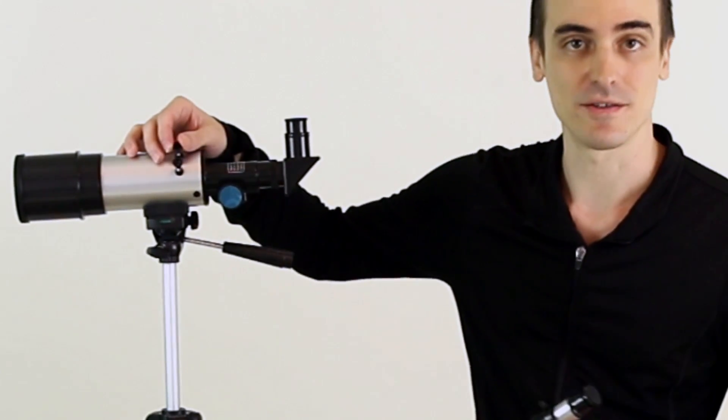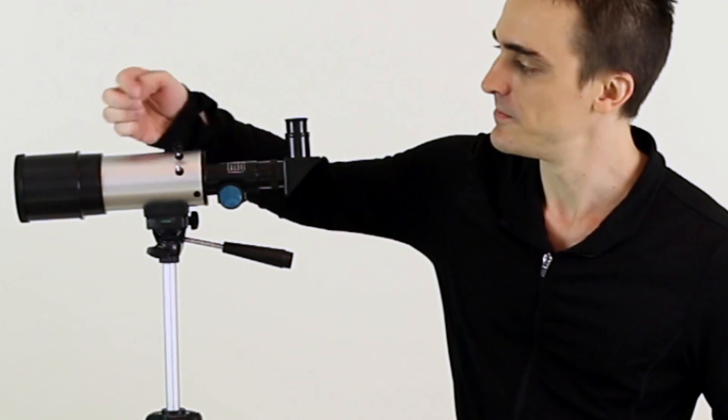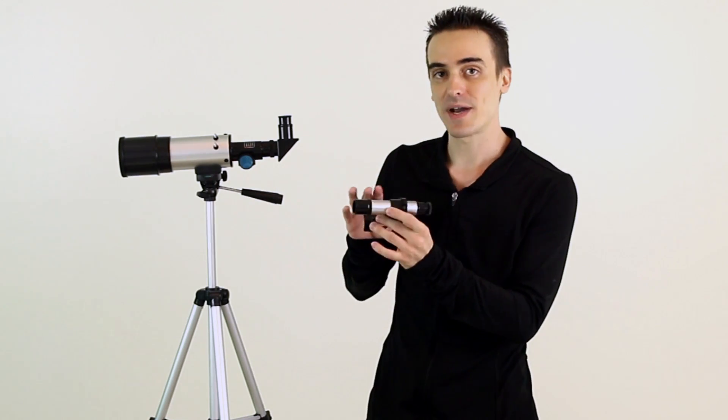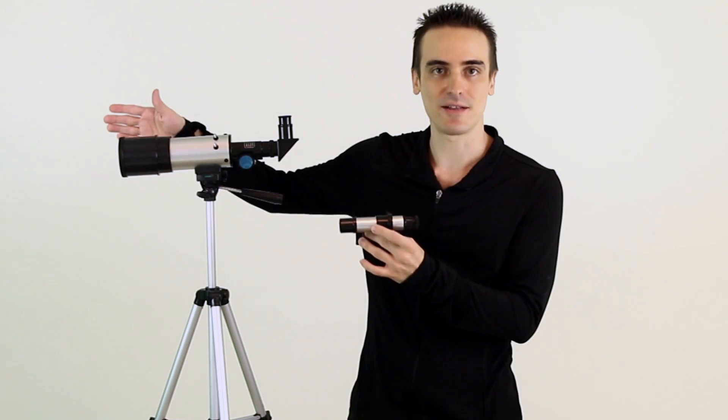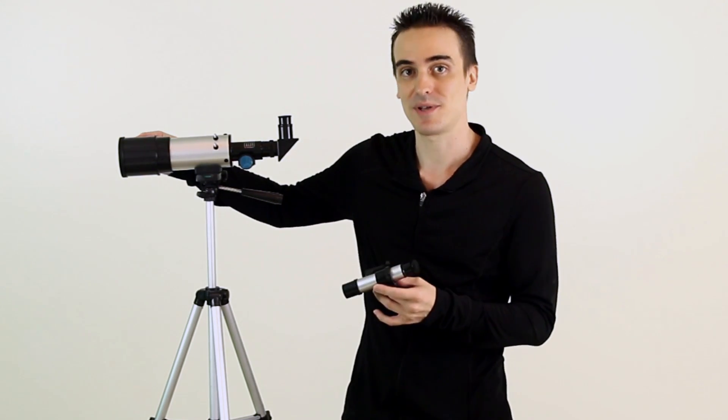For this step, you'll want to locate the two plastic nuts here on the side of your telescope. Go ahead and unscrew those now. Once you've done that, go ahead and take your finder scope and place it so that the larger end of the finder scope, this part here, is facing the same direction as the telescope. Then you simply tighten the nuts back onto the screws to secure it in place.